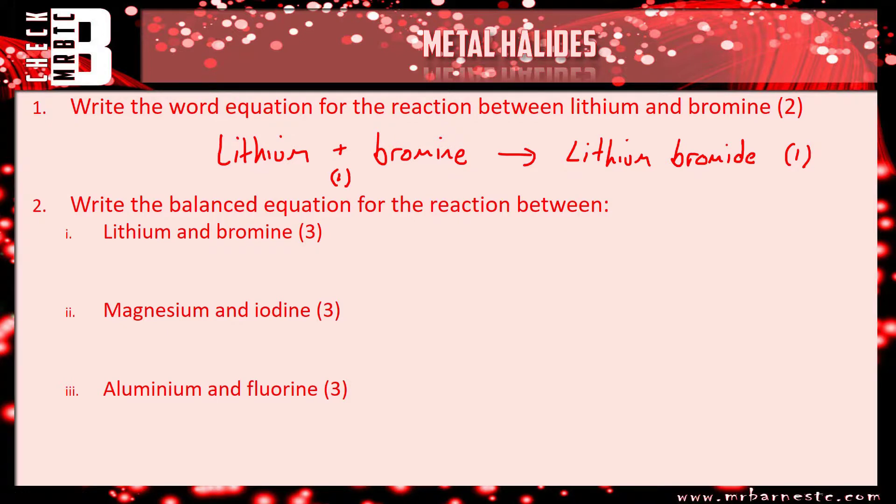Onto the balanced equations, so you should know that the formula for lithium is Li. You know that the halogens are diatomic by now, so Br2. And remember, lithium is in group 1, therefore you need one of that and one of that. So it's LiBr. You then need to balance it. I've got two bromines over there, so I'm going to put two in front of my LiBr. I've then got two lithiums, so I need to double this. Now you'll get one mark for your left-hand side, one mark for the correct formula for lithium bromide, and one mark for your balancing.